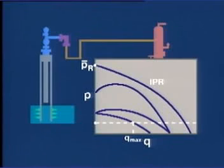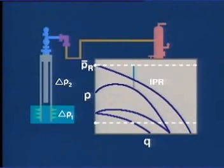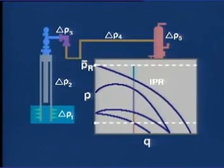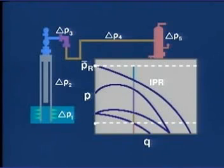We may summarize the system pressure losses that occur at this production rate. Beginning with the average reservoir pressure, we observe the pressure losses in the formation, up the tubing, across the choke, through the surface lines, and separator. In a sense, the reservoir pressure drives the whole system and is used up along the way. If we wish to increase the flow rate, changes must be made to the flow system that reduce some or all of these pressure losses.